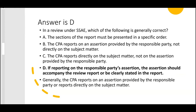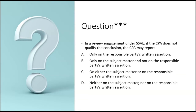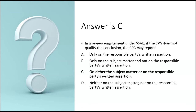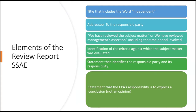In a review engagement under SSAE, if the CPA does not qualify the conclusion, the CPA may report: A — only on the responsible party's written assertion: no. B — only on the subject matter: no. C — on either the subject matter or the responsible party's written assertion: yes. If the CPA does not qualify the conclusion, that means it's an unmodified conclusion, and the CPA can report on either the subject matter or the written assertion. C is correct — exactly the kind of question you've got to be ready for.